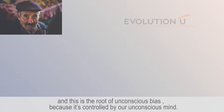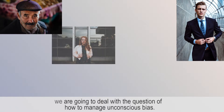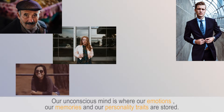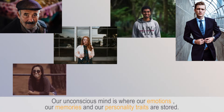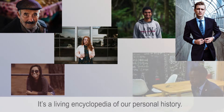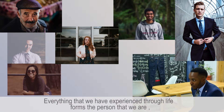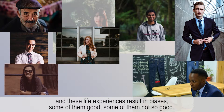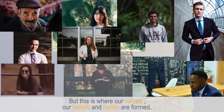Because it's controlled by our unconscious mind, it's these unconscious processes that we need to understand if we are going to deal with the question of how to manage unconscious bias. Our unconscious mind is where our emotions, our memories, and our personality traits are stored. It's a living encyclopedia of our personal history. Everything that we have experienced through life forms the person that we are, and these life experiences result in biases — some of them good, some of them not so good. But this is where our values, our beliefs, and our habits are formed.